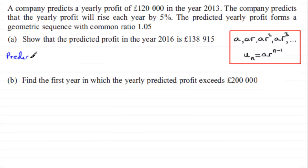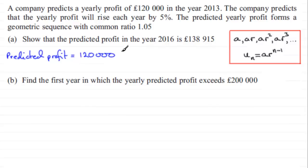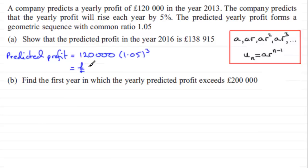Using this, the predicted profit equals ar^(n−1), where a = 120,000 and r = 1.05. The first term corresponds to 2013, then 2014, 2015, 2016 — that's four terms, so n−1 = 3. Working this out gives 120,000 × 1.05³, which gives the required answer of £138,915.